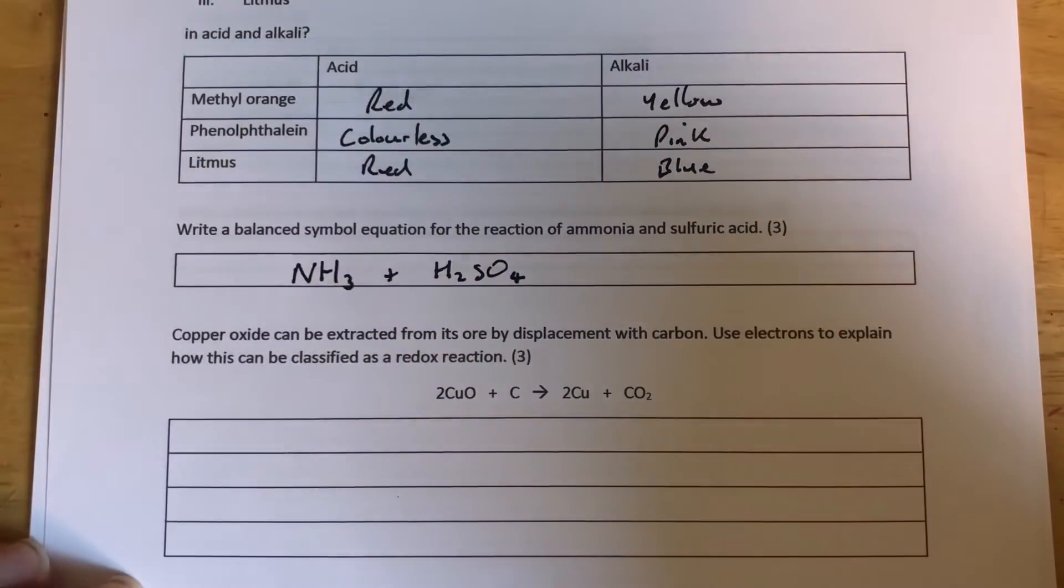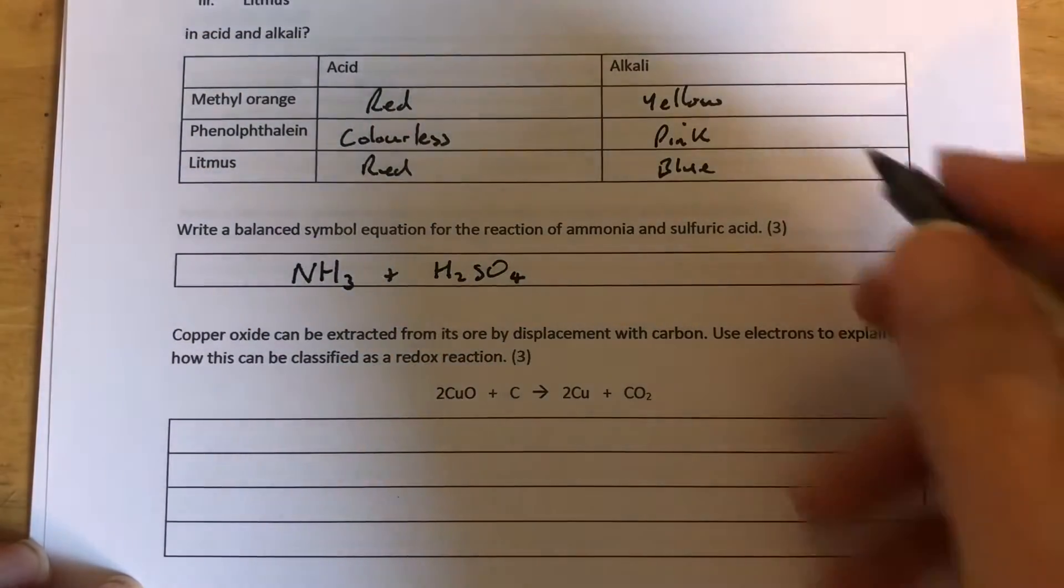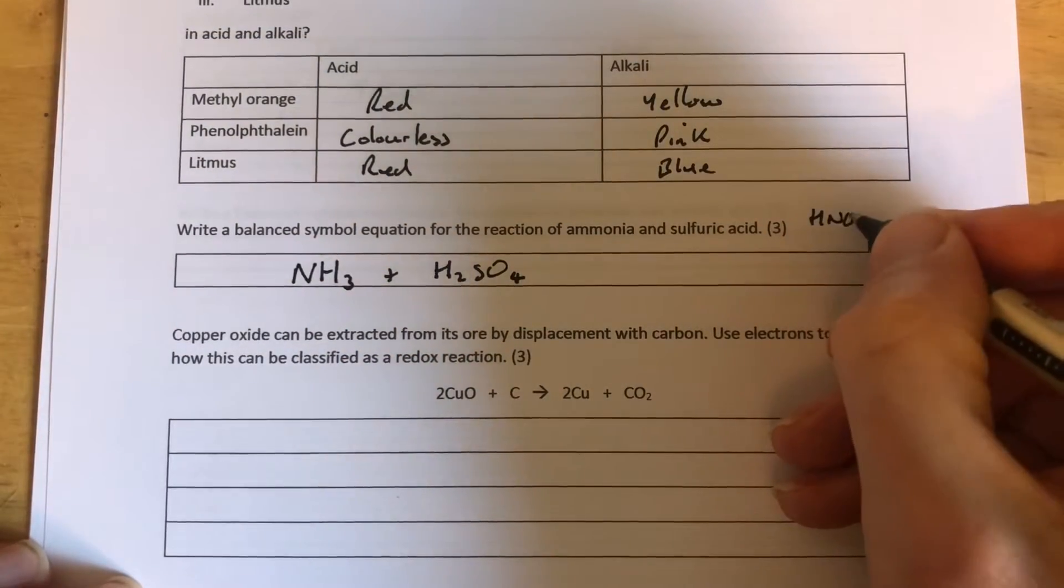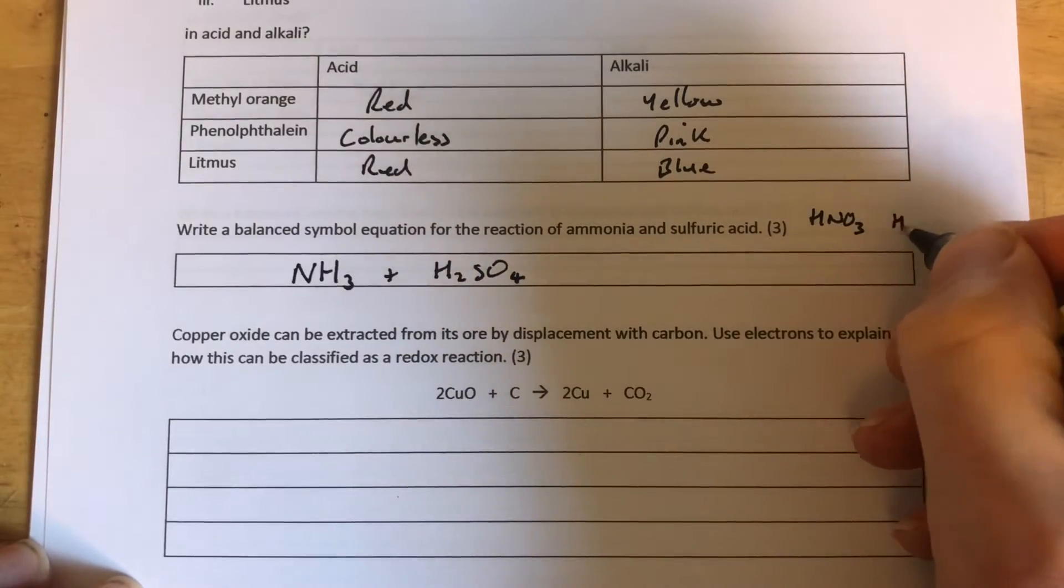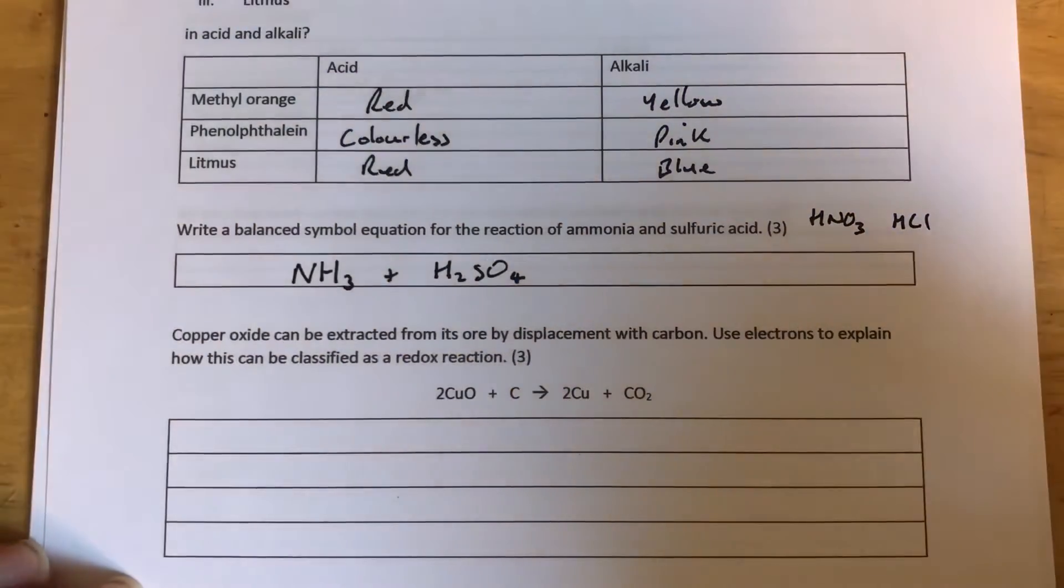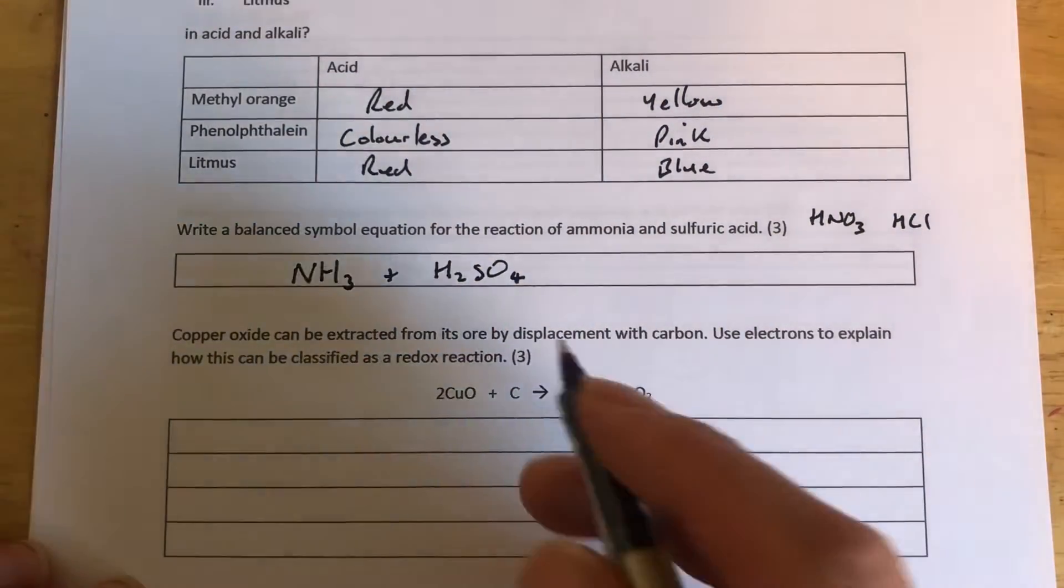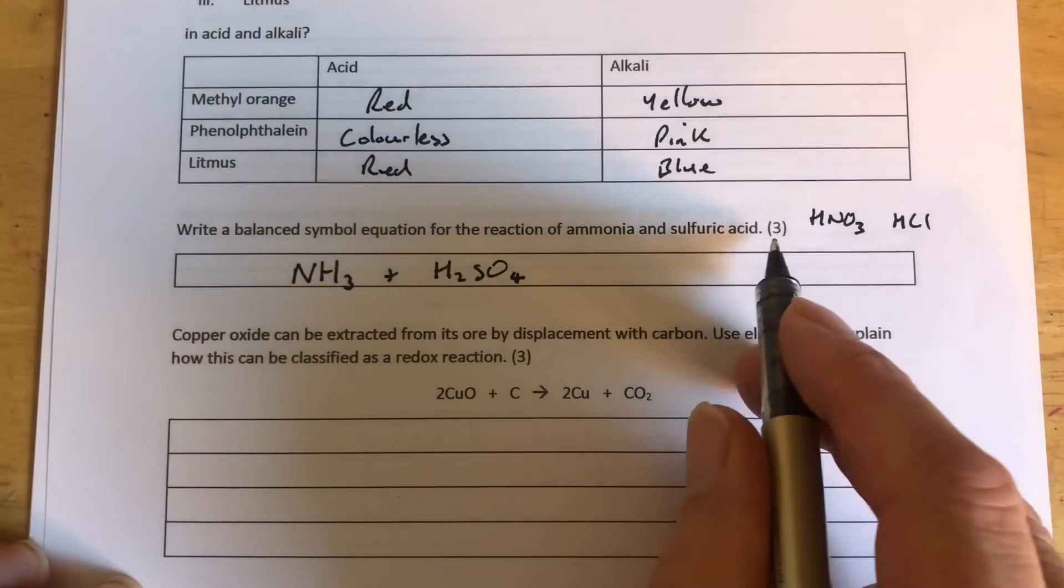Other common acids are, of course, nitric HNO3, and hydrochloric HCl. We need to know these common acid formulae, and we need to know ammonium. So if you've got those two, you can give yourself one mark out of three.